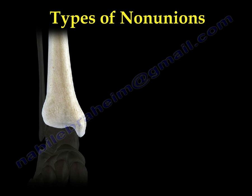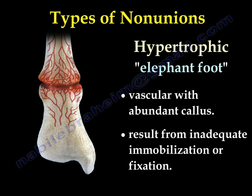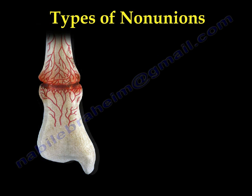Types of Non-Union. The first one we call Elephant Foot or Hypertrophic Non-Union, meaning there is a lot of callus. It is vascular and results from inadequate immobilization or fixation. So there is mobility, and when there is mobility, there is a lot of callus.